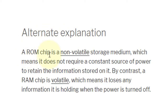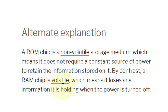A ROM chip is a non-volatile storage medium, which means it does not require a constant source of power to retain the information stored on it. In contrast, a RAM chip is volatile, which means it loses any information it is holding when the power is turned off.